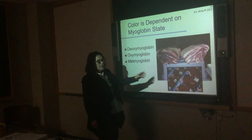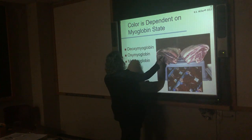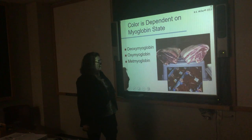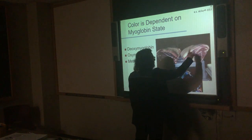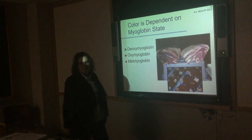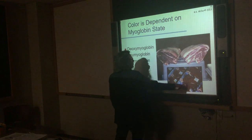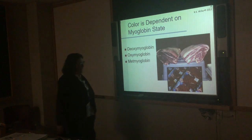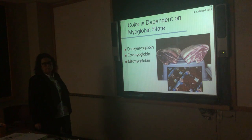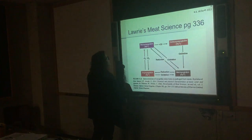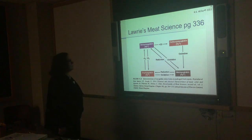I have pictures so you can see each state. Metmyoglobin is brown. Oxymyoglobin is bright cherry red — those are from the same animal. Vacuum-packaged meat would be deoxymyoglobin, which is purple. Those are different states of myoglobin with approximately the same amount of myoglobin. This is from Lawrie's Meat Science, 8th edition.